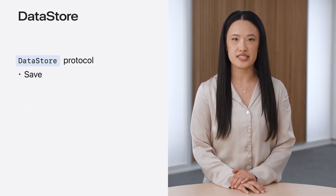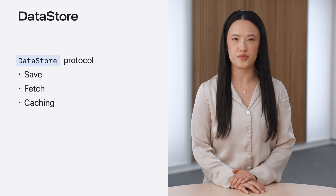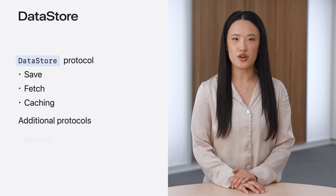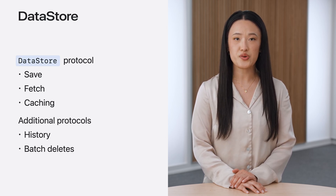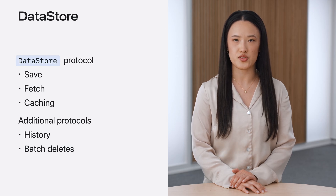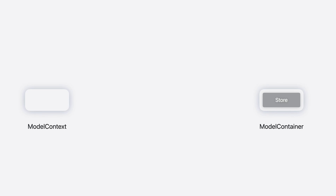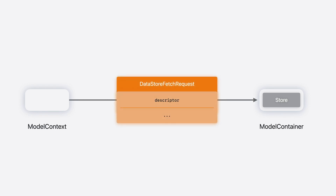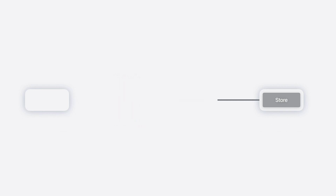The data store protocol defines all of the functionality Swift Data needs for the store to be usable by the model context, including save, fetch, and caching. Additional protocols define optional data store features, like the new history protocol for describing all of the changes made to the store. The model context communicates with stores using requests and responses from the data store protocol. For example, when fetching data from a store, the model context sends the store a DataStoreFetchRequest containing the fetch descriptor that describes the data the store should retrieve. Once the store retrieves the model values, it creates a snapshot for each model and returns them in a DataStoreFetchResult. Then the model context creates a persistent model for each of the snapshots.